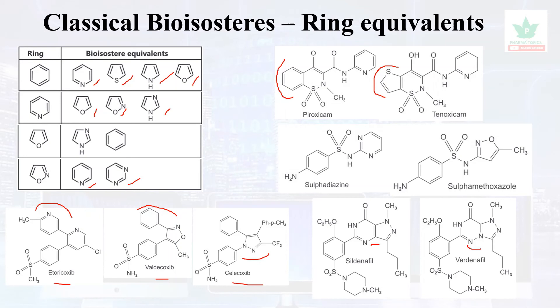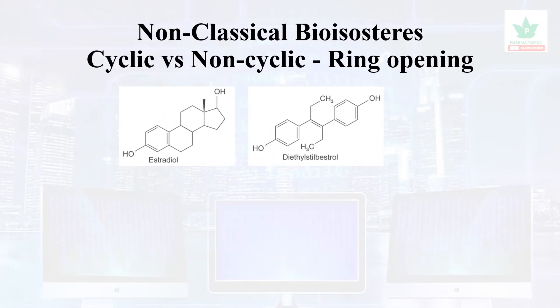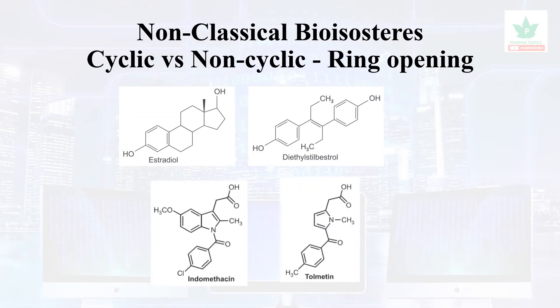There are also examples of cyclic versus non-cyclic bioisosterism, involving ring opening. Estradiol and diethylstilbestrol are an example — diethylstilbestrol is more potent than estradiol. Similarly, indomethacin and tolmetin are both NSAIDs, with tolmetin being more potent than indomethacin.